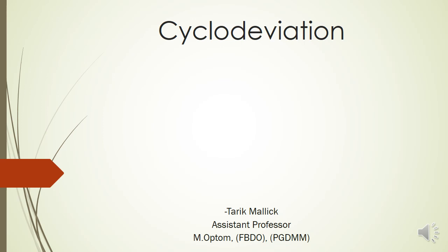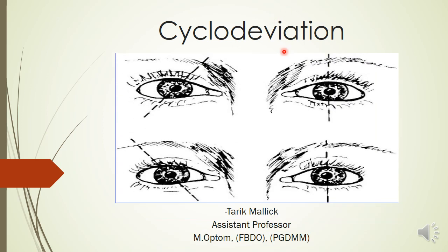Hello and welcome everyone. Today we will be discussing our topic which is cyclo deviation. The term cyclo deviation is not very apparent to see because the deviation is basically the rotation of the eye into the anterior-posterior axis. The eye is either intorted or extorted from the primary position. That is what cyclo deviation means.